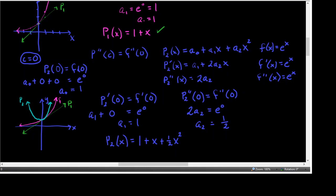Now get back on Y1 equals E to the X, toggle up to Y3 — that's the quadratic equation. Look at its Y value: 1.105. Go down to get back to E to the X: 1.105, 1.709. That's even better — a whole lot closer. So the idea is that as we get higher and higher degree polynomials, we'll get better and better approximations.